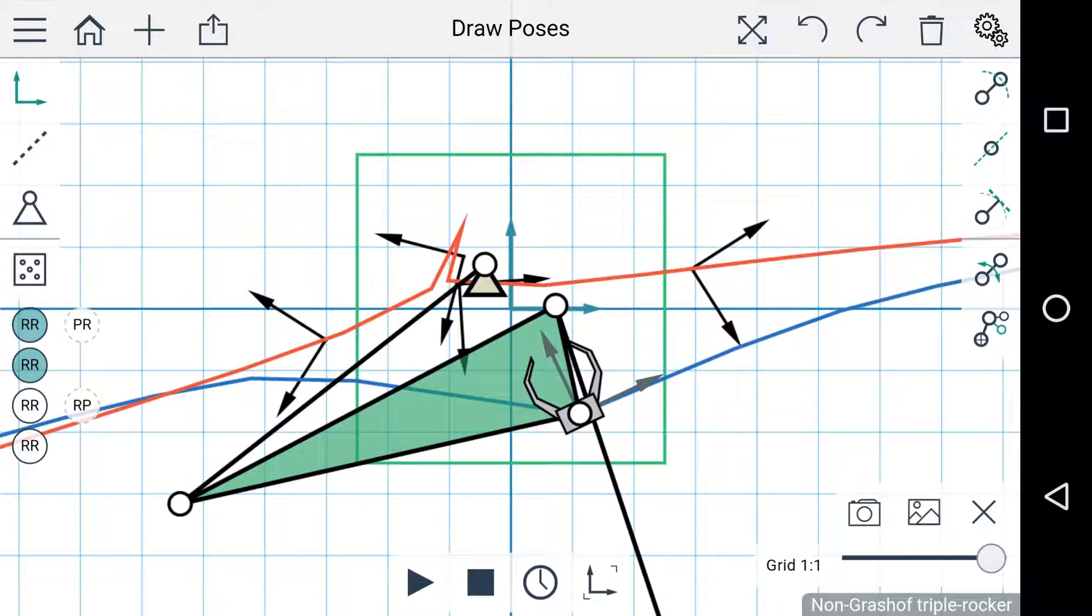This is useful for a few reasons. One of them is that if you're drawing a mechanism over an image, the image will fit to the workspace area so you can make this smaller or larger by changing the size of the workspace.